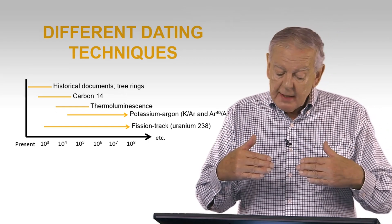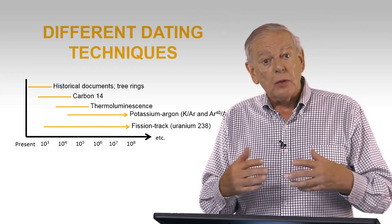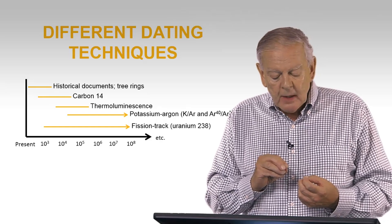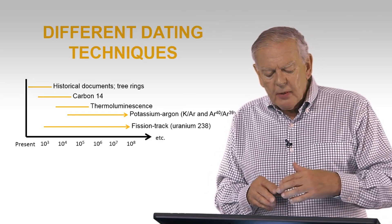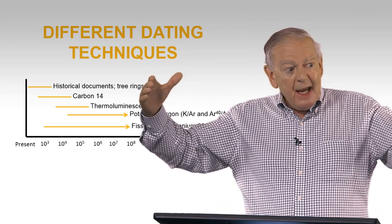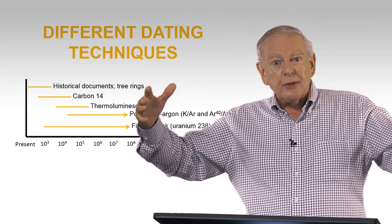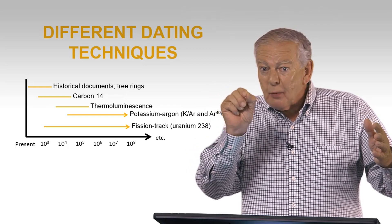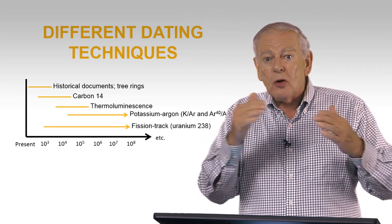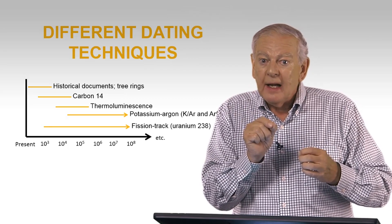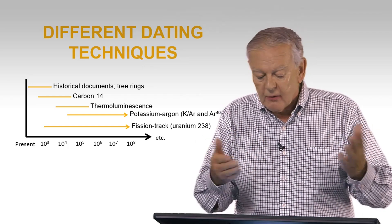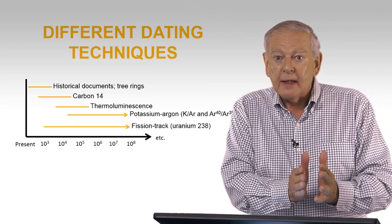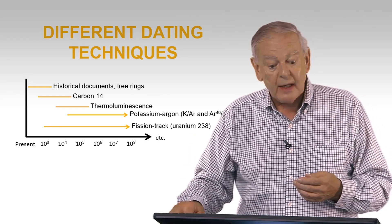Carbon-14 overlaps with tree rings — you can take a huge tree like a sequoia that lives for thousands of years, count the tree rings which occur every year, and correlate that with carbon-14 dating. It also overlaps with methods like thermoluminescence. Many of these dating methods overlap in time and can serve as a check on one another to verify you're getting accurate dates.